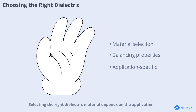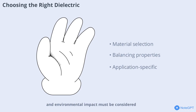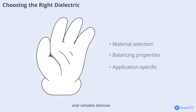Selecting the right dielectric material depends on the application. Factors like dielectric constant, strength, loss, and environmental impact must be considered. Engineers balance these properties to design safe, efficient, and reliable devices, whether for consumer electronics or industrial power systems.